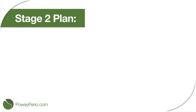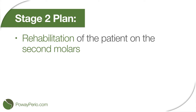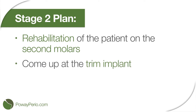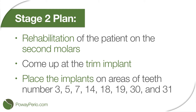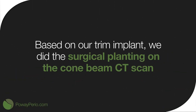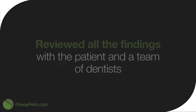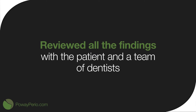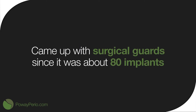Then for stage 2, our plan was the rehabilitation of the patient on the second molars, which we came up with the treatment plan to place implants on the area of teeth number 3, 5, 7, 14, 18, 19, 30, and 31. Based on our team implant approach, we did the surgical planning on the cone beam CT scan and reviewed all the findings with the patient and also with the restorative dentist. We came up with a surgical guide since it's a multiple implant case,